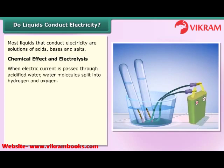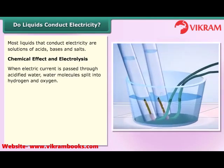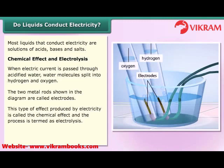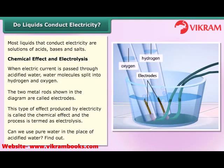When electric current is passed through acidified water, water molecules split into hydrogen and oxygen. The two metal rods shown in the diagram are called electrodes. This type of effect produced by electricity is called the chemical effect, and the process is termed as electrolysis. Can we use pure water in place of acidified water? Find out.